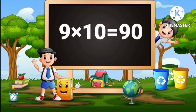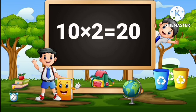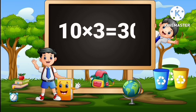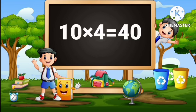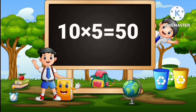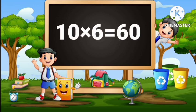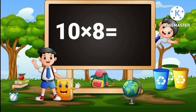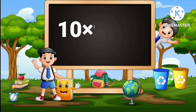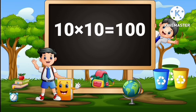Nine tens are ninety. Ten ones are ten. Ten twos are twenty. Ten threes are thirty. Ten fours are forty. Ten fives are fifty. Ten sixes are sixty. Ten sevens are seventy. Ten eights are eighty. Ten nines are ninety. Ten tens are one hundred.